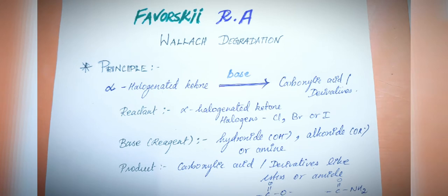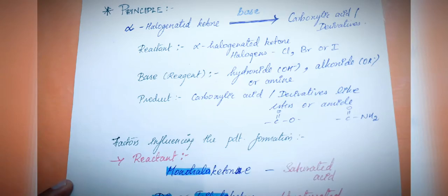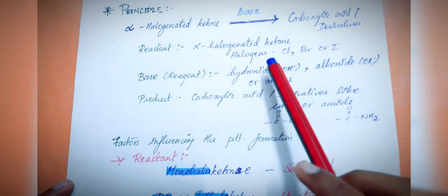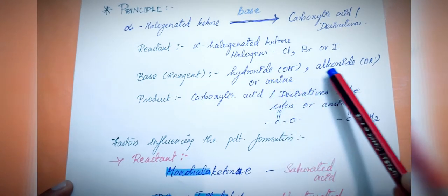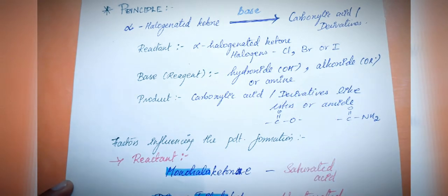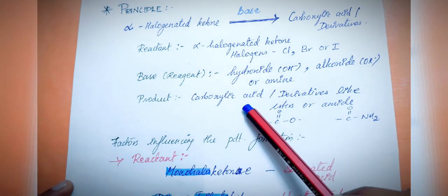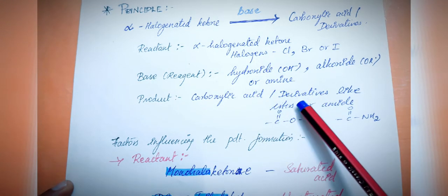The main reactant is a ketone in which the alpha carbon atom is substituted by a halogen — it can be chlorine, bromine, or iodine. The first point is clear: the reactant should be an alpha halogenated ketone. The base that you are adding can either be a hydroxide, alkoxide, or amine.